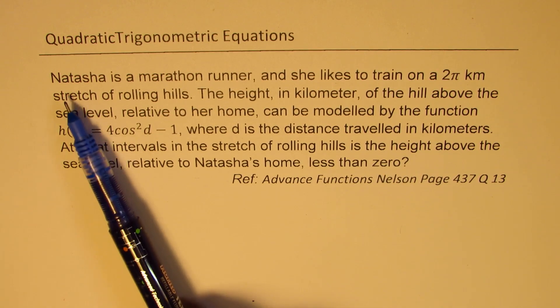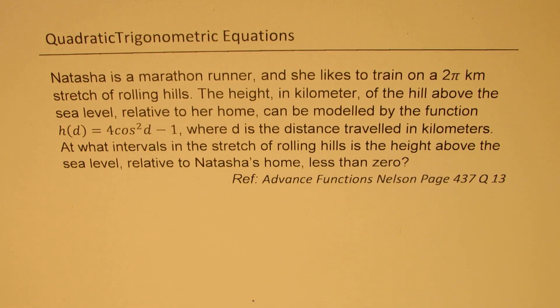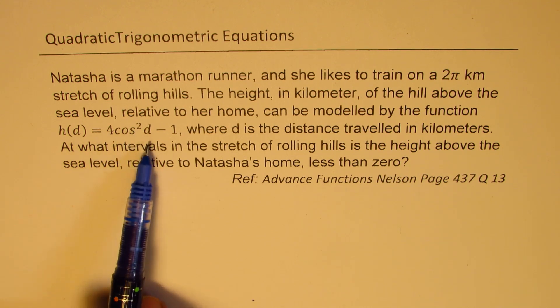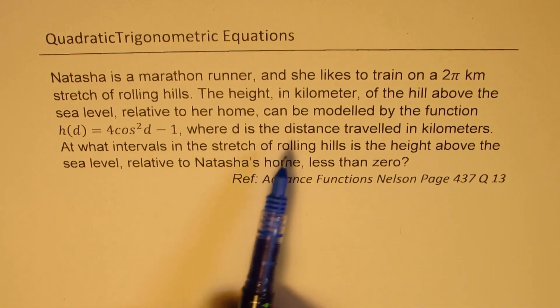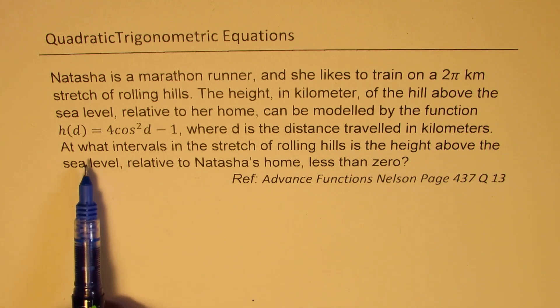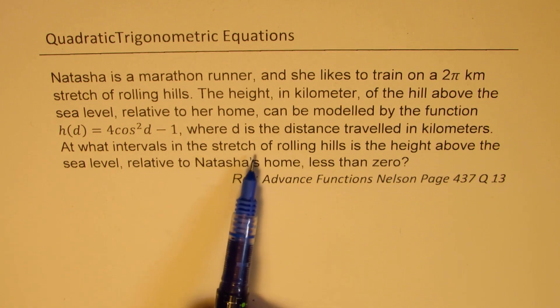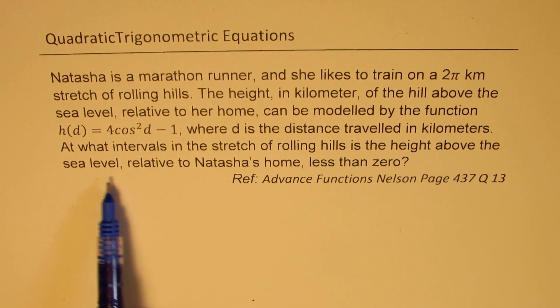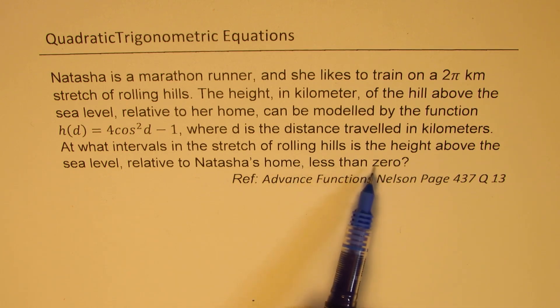The question here is: Natasha is a marathon runner and she likes to train on a 2π kilometer stretch of rolling hills. The height in kilometers of the hill above the sea level relative to her home can be modeled by the function h(d) = 4cos²d - 1, where d is the distance traveled in kilometers. At what intervals in the stretch of rolling hill is the height above the sea level relative to Natasha's home less than zero?